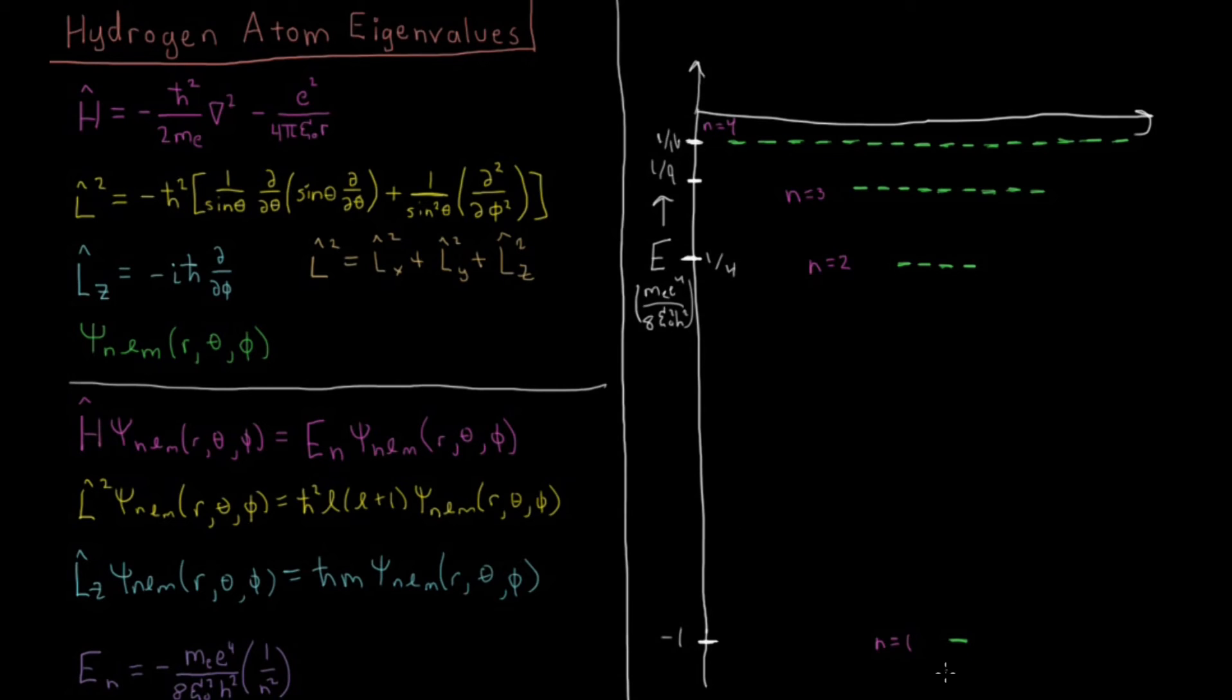Then we have values of L that are possible. And down here we're going to have L equals 0. At N equals 2, we can have 0 and 1. It's going to be 3 states with L equals 1. We can have 0, 1, and 2 at N equals 3. And at N equals 4, we start getting very busy.